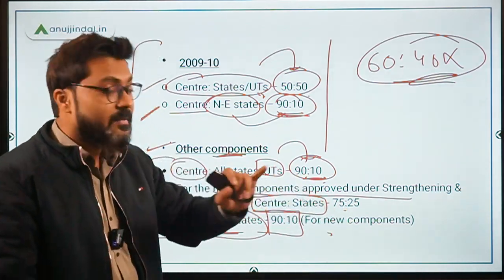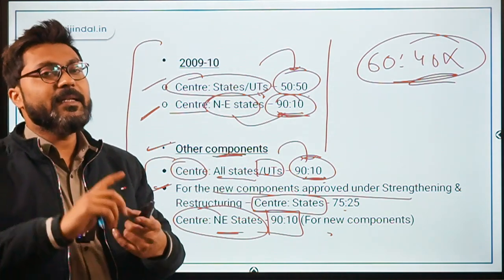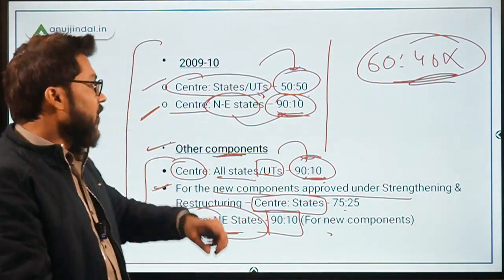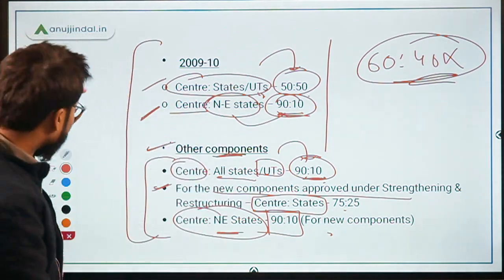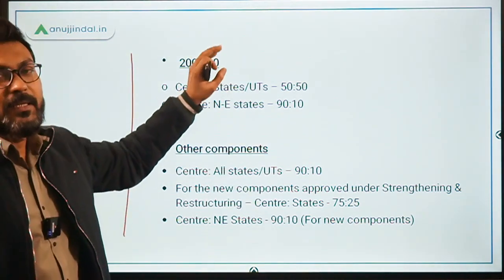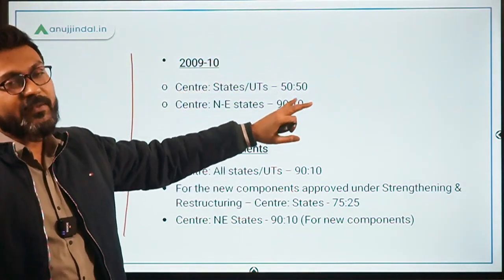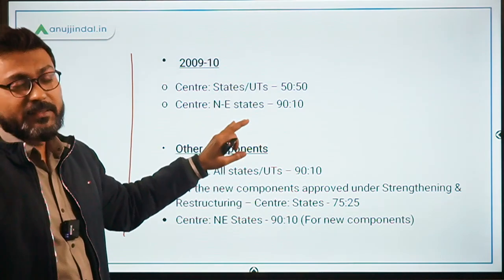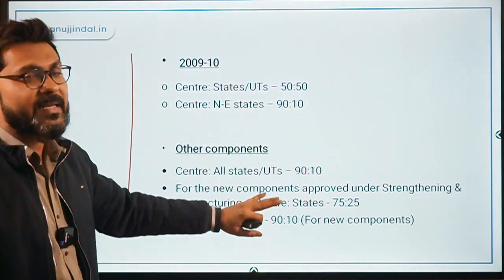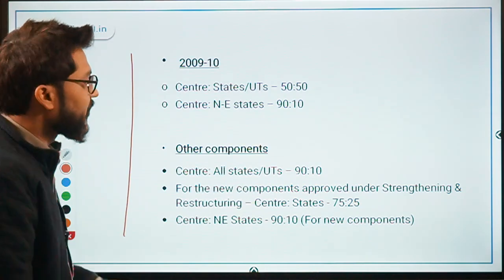To recap the funding pattern: for supplementary nutrition, the ratio is 50:50 for normal states or UTs, and 90:10 for northeastern states. For other components, it is 90:10 across all states including northeastern states and UTs. I hope the funding pattern is clear.